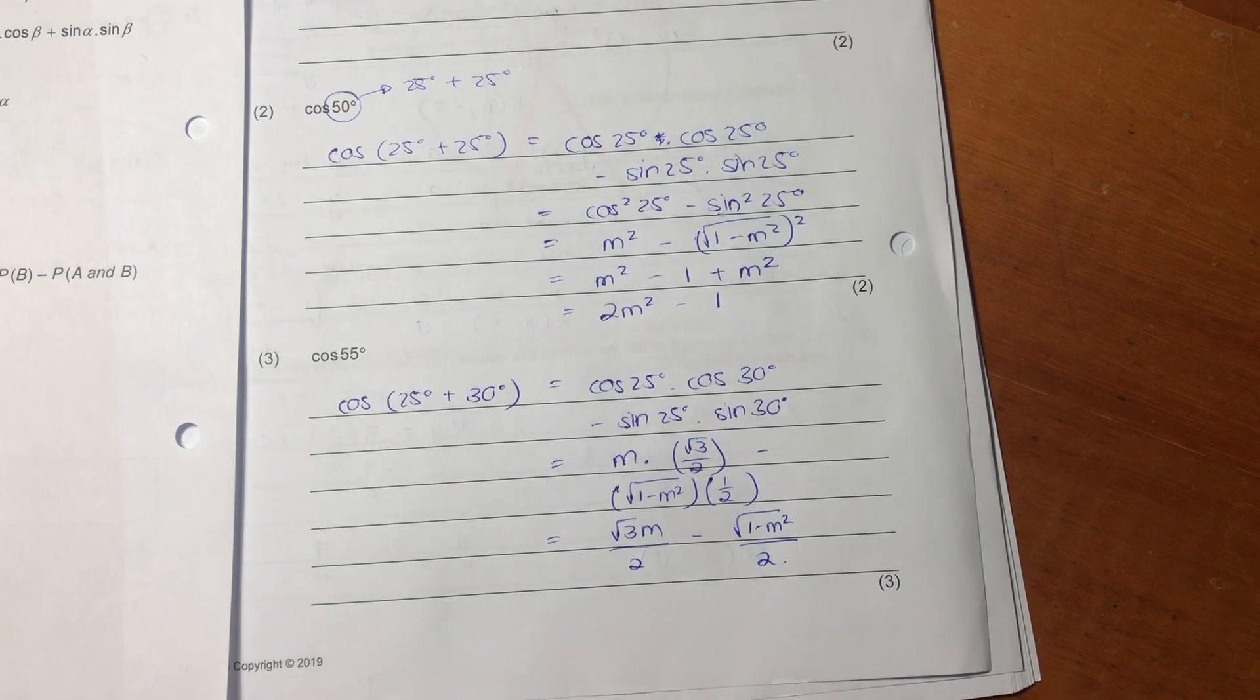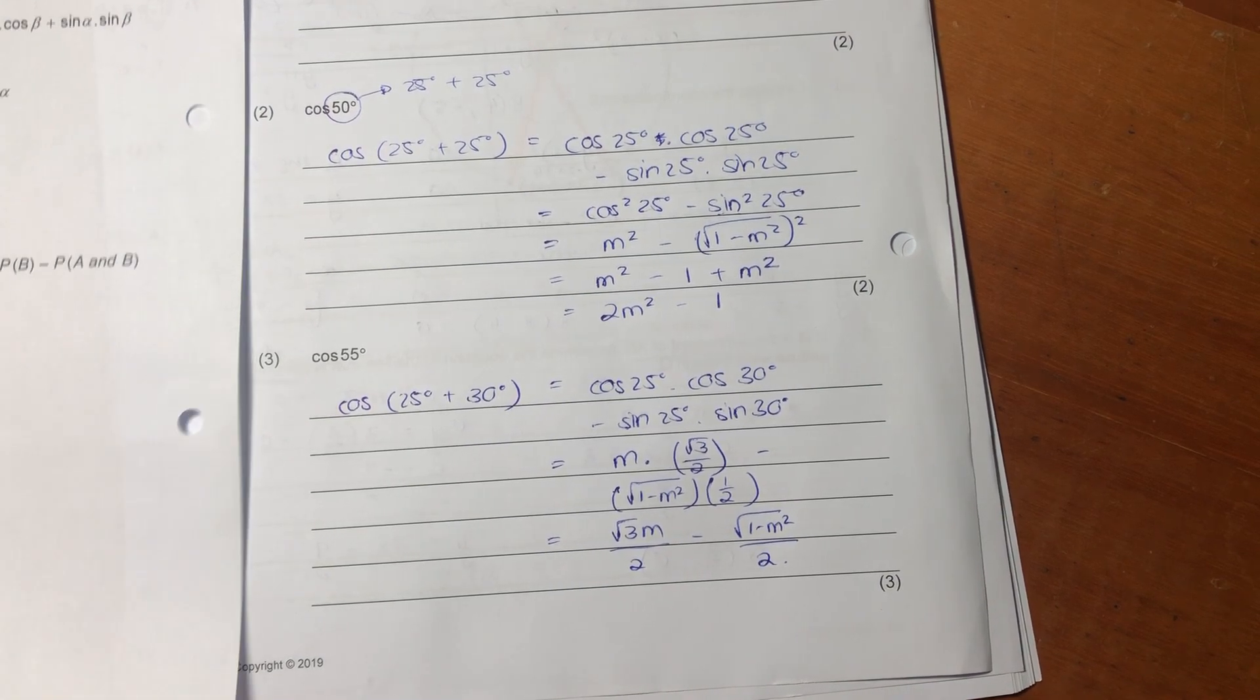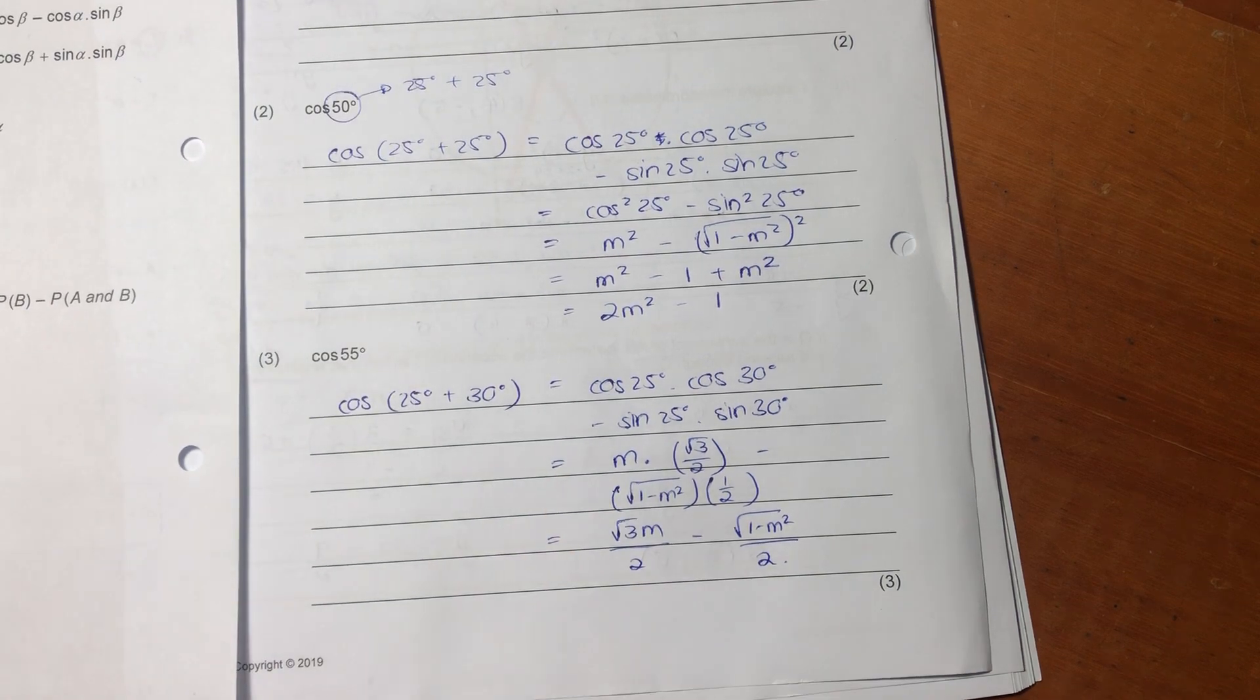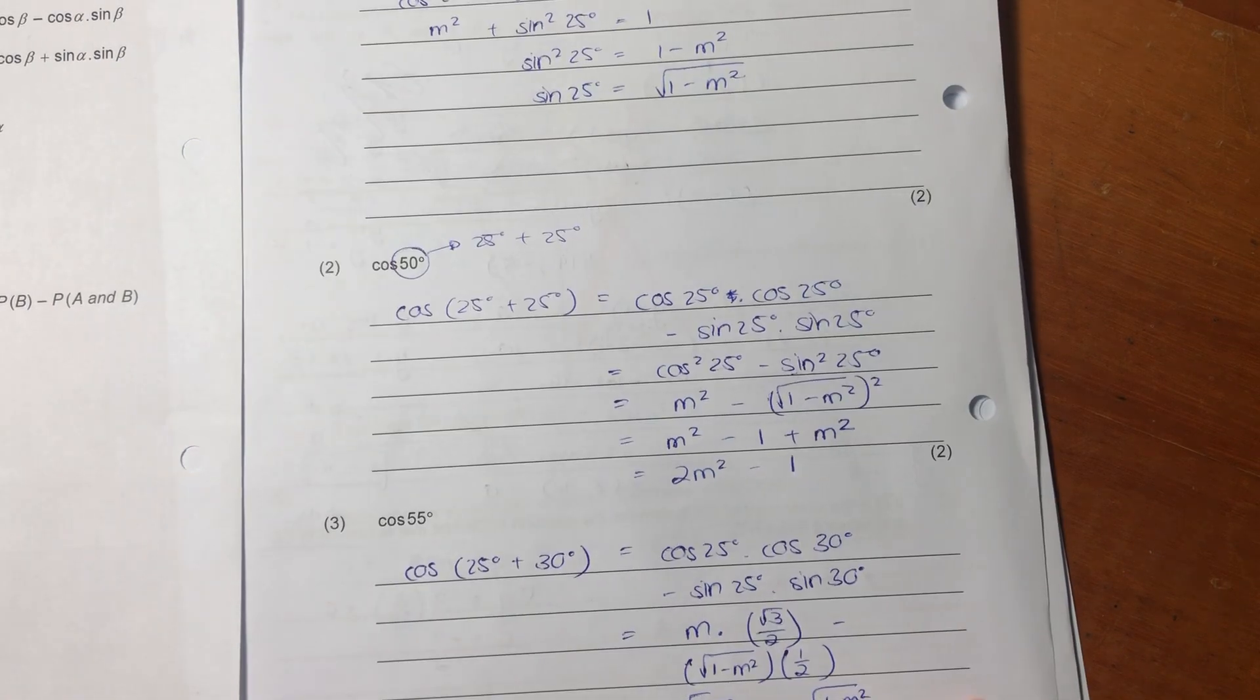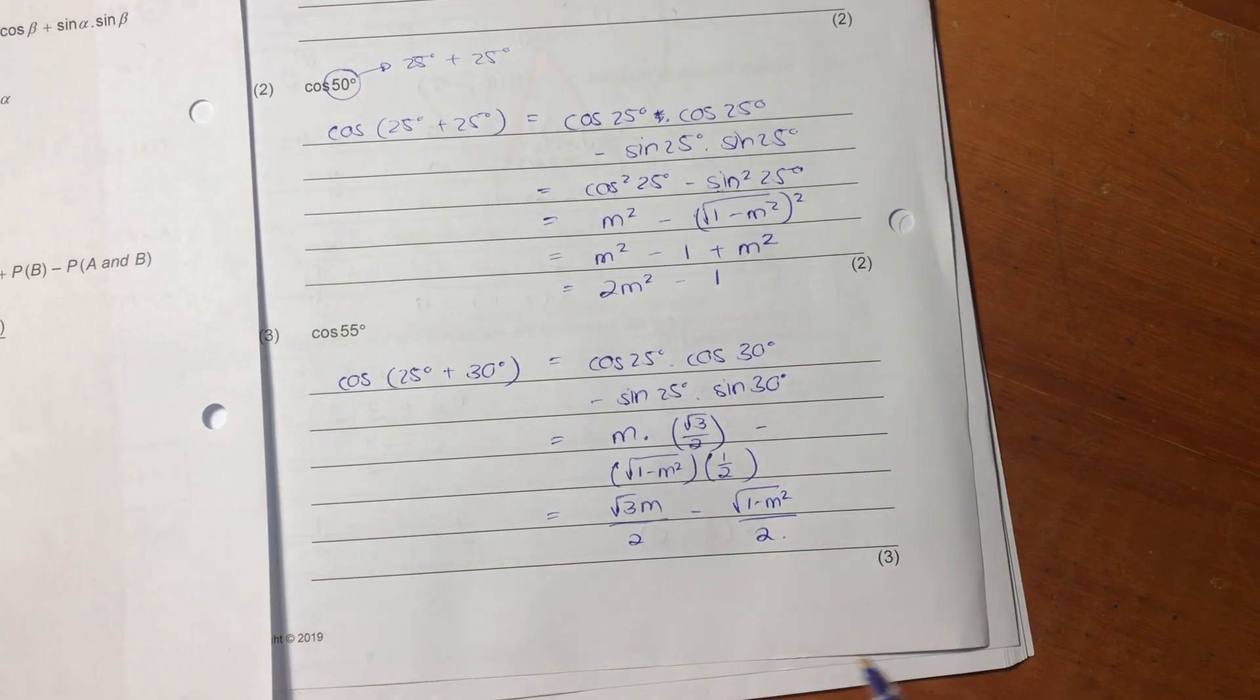So again, go and practice questions like this where you're manipulating these different identities to get to an answer and to basically show that you are comfortable manipulating trigonometry and you understand the different relationships and the different identities that you can leverage in these questions. Let's continue.